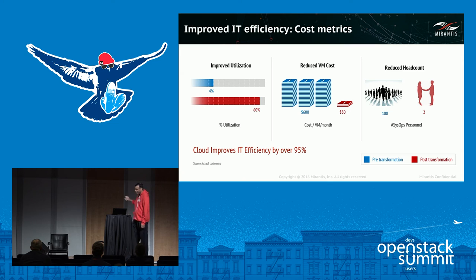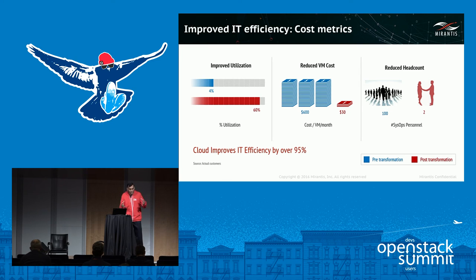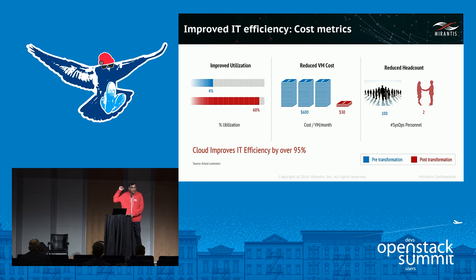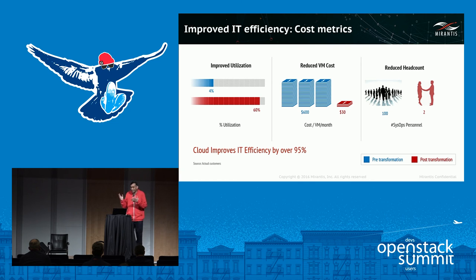The most interesting example came from a media and telecom company. They had dozens of software projects, and each project had their own sysop personnel — across all their projects they had 100 people doing system operations. After they implemented OpenStack, it was down to two. Those people were either repurposed or let go, but effectively it's automation — you're automating everything. If you look at financial metrics, 70% of your cost is people, so going from 100 to 2 represents a tremendous improvement. Our white paper will have the actual anonymous case studies published shortly.